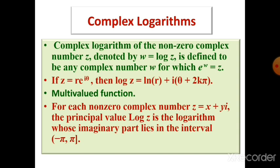The complex logarithm log z is the inverse of e^z. If z = r·e^(iθ) in polar form, then log z = log r + i(θ + 2kπ) for integer k. This makes log z a multi-valued function — different values of k give different values of log z. The reason is precisely that e^z is periodic: e^(z₁) = e^(z₁ + 2πi) = e^(z₁ + 4πi) = w, so the inverse image of w contains z₁, z₁ + 2πi, z₁ + 4πi, and so on.